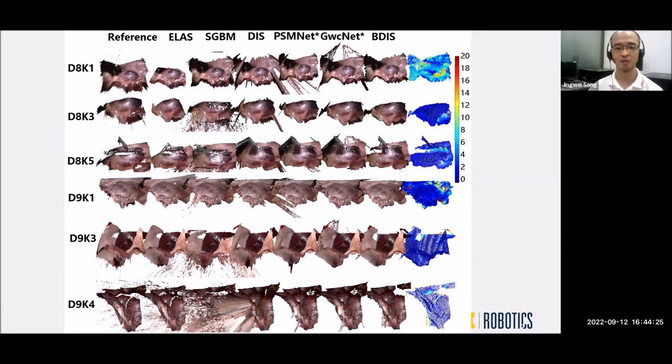DIS is the deterministic method without uncertainty quantification. As the figure shows, there are many outliers and errors in this algorithm.